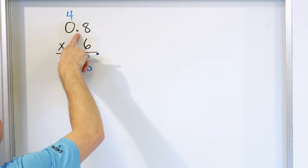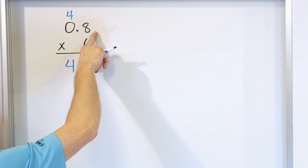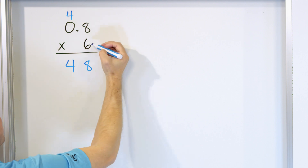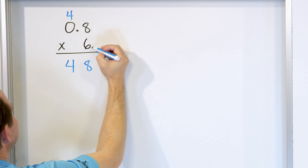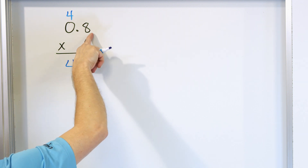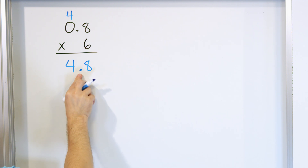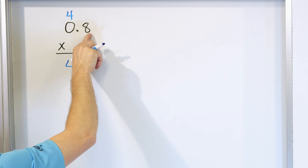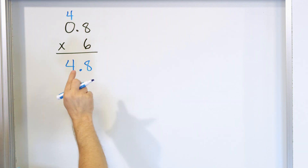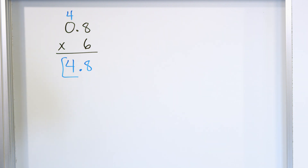Where do I put the decimal? You look at the decimal points you have and see how many digits after the decimals you have in your problem. I have one digit after the decimal. There's an implied invisible decimal point after the 6, but we don't count that. We just look at the digits after the decimal. So in my answer, I must have a single digit after the decimal as well. The answer is 4.8.